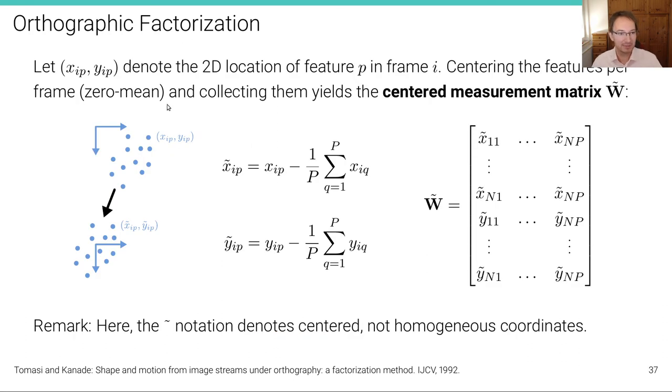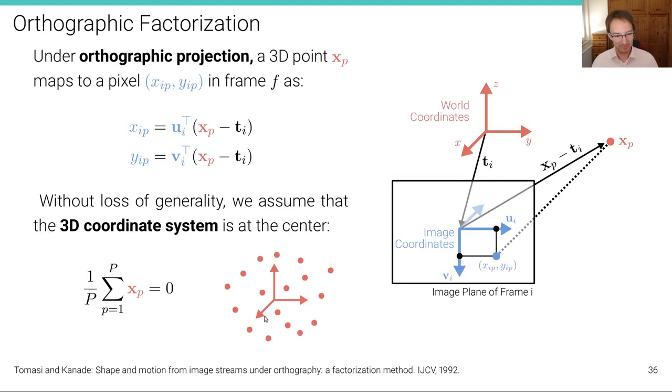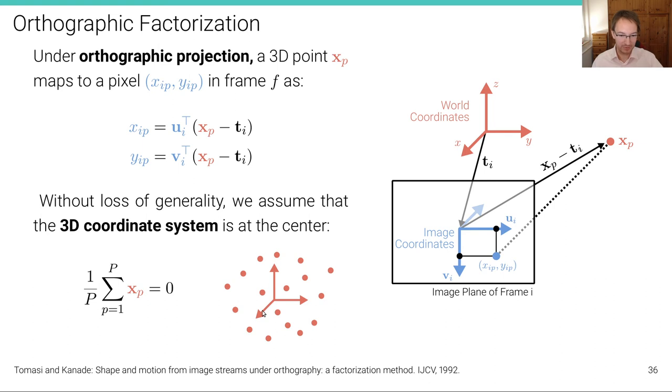Now, let xip and yip denote the 2D location of feature p in frame i. By centering the features per frame and collecting them yields the so-called measurement matrix. We are not only centering these points that we want to recover in 3D to remove that ambiguity, but we're also centering the points in the image coordinates before actually doing something with them. So if this is the image that we observe for frame i, we're centering them such that they are zero mean. And this is expressed by these two equations here.